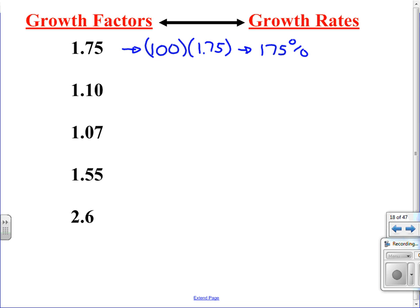To determine the percent increase, then, we subtract the whole, the original amount. So I will subtract 100%, and what is left is my percent increase. And so 1 and 75 hundredths as a growth factor is equivalent to a 75% increase, which is the growth rate.